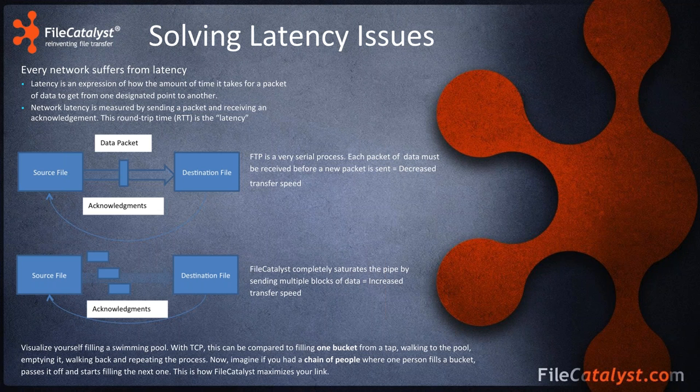With File Catalyst we do things differently. We load up multiple blocks of data — you can define the block size in the software — and send multiple blocks simultaneously, ensuring we're saturating the link. Unlike FTP, which causes a lot of chatter by acknowledging every single packet, File Catalyst implements what's called negative acknowledgement: we only acknowledge what's missing versus acknowledging every packet.